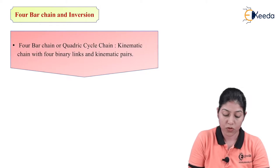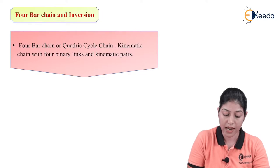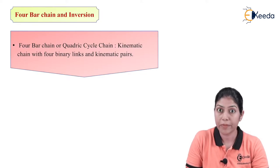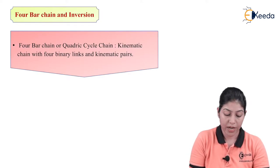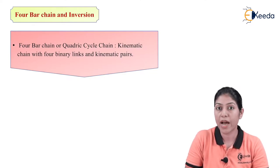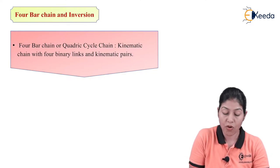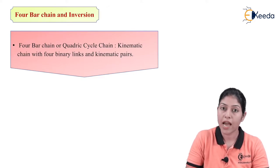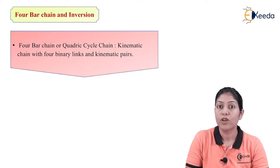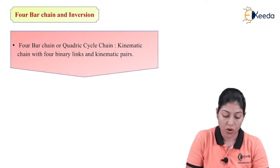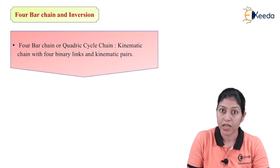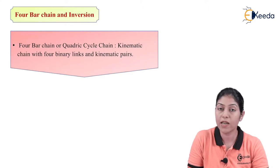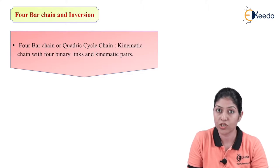We can define this 4-bar chain as a kinematic chain with 4 binary links and 4 kinematic pairs, as well as 4 number of turning pairs and 4 number of joints. This particular chain is called 4-bar chain, and if we are fixing one link, it will become 4-bar chain mechanism.